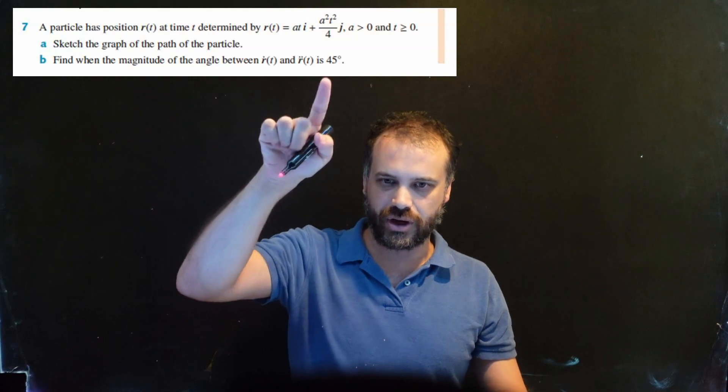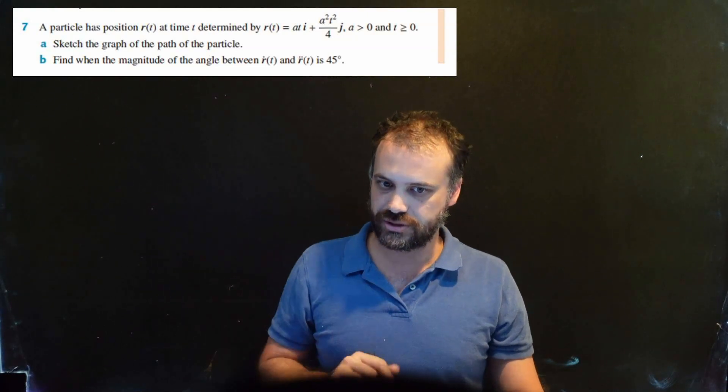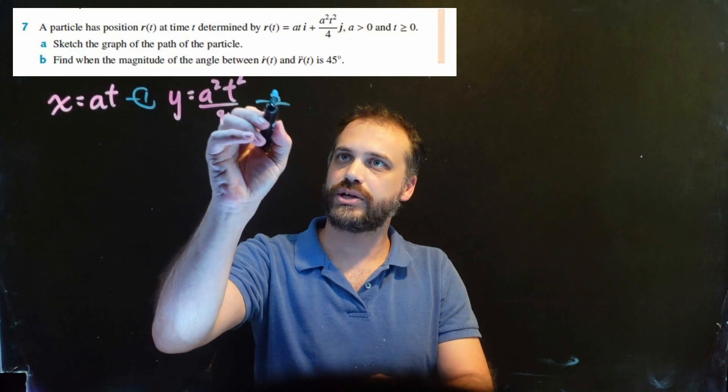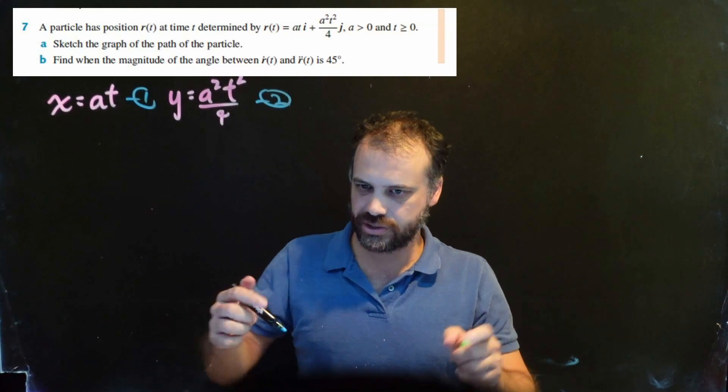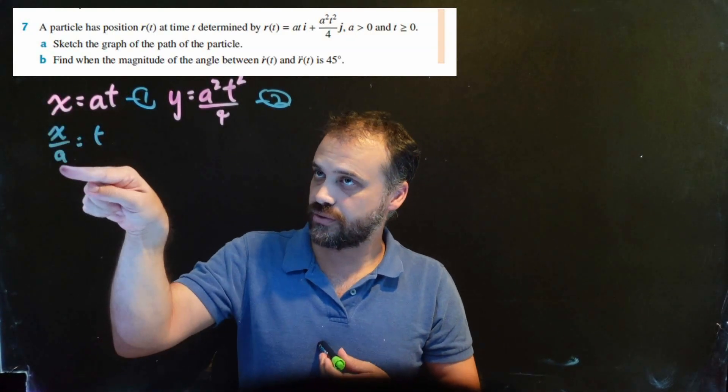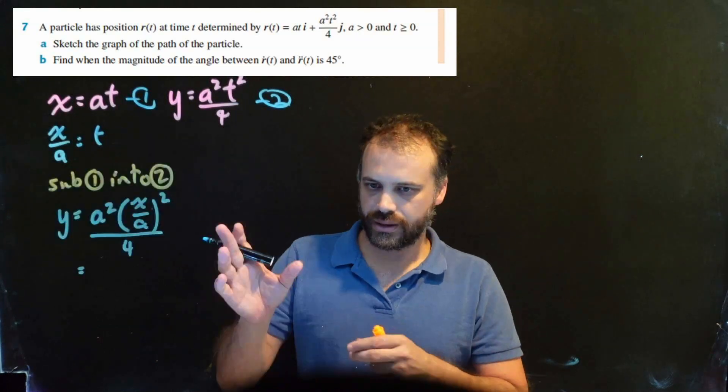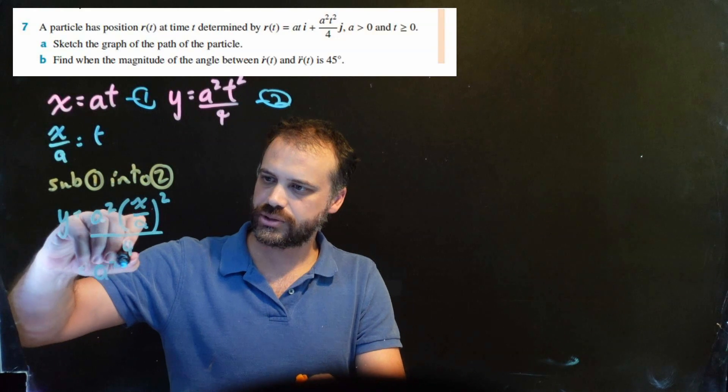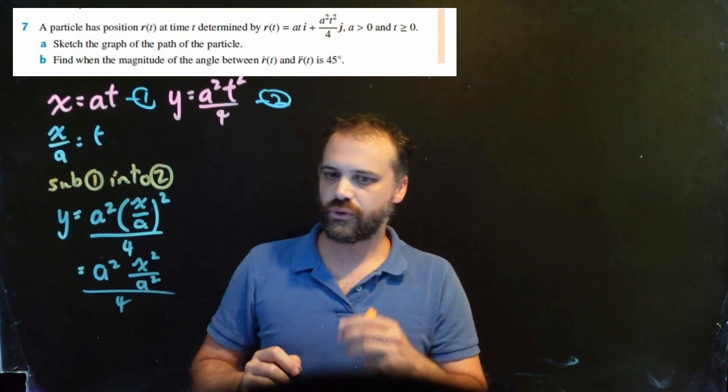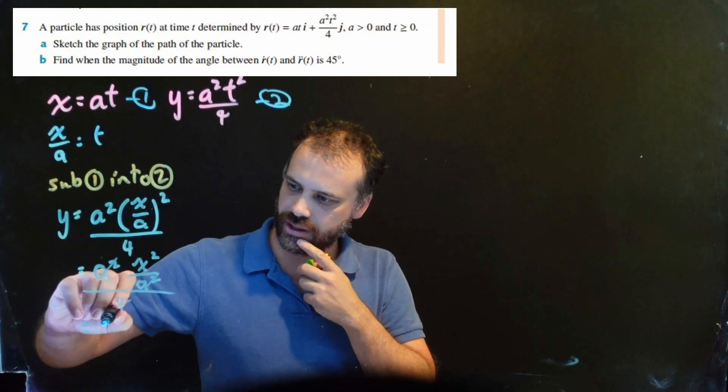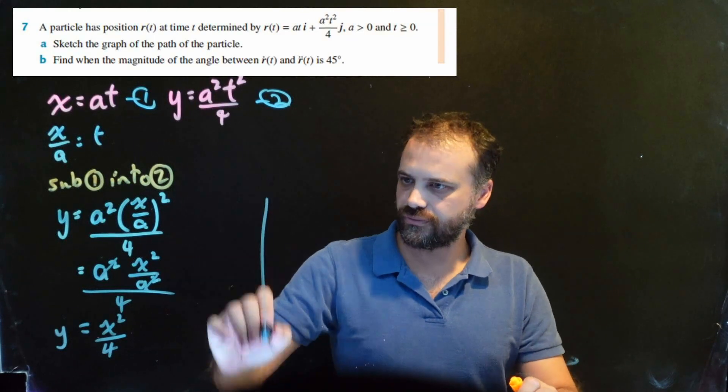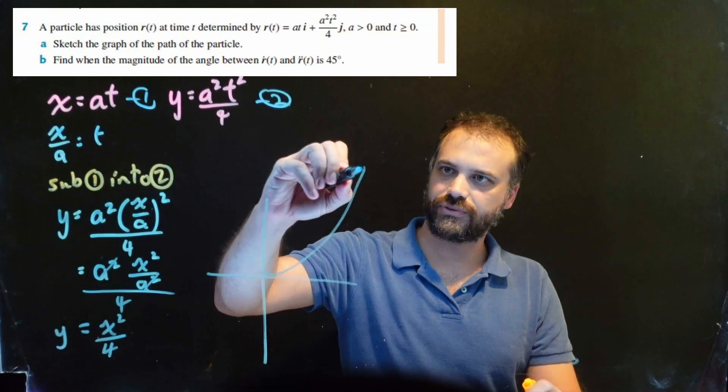If I want to sketch the graph of the particle, I want to convert this vector function to a Cartesian function. x equals at and y equals that. From here we've got equation 1, we've got equation 2, we sub 1 to the other. We say t equals x over a, and then we're going to sub x over a for t into that equation. Now when we do that we get something pretty cute, we get a squared and then x squared on a squared by just squaring both of those over 4. Those a squareds cancel each other out and I'm left with x squared on 4. y equals x squared on 4, I can sketch the graph of y equals x squared on 4, it looks roughly like this.